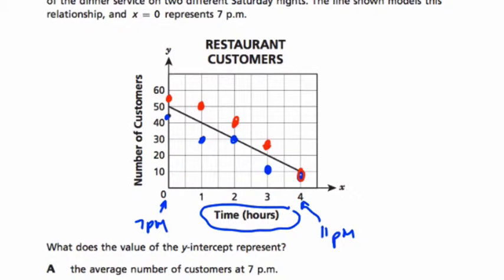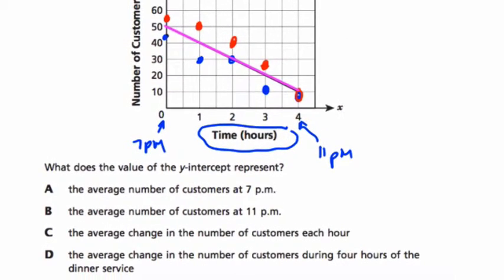This line is kind of like an average of those numbers. It's a line of best fit trying to get an approximation of what's going on. So what does the value of the y-intercept represent? That's the point where your line crosses the y-axis, right here. This is the y-intercept. The x-intercept would be down here on the x-axis.